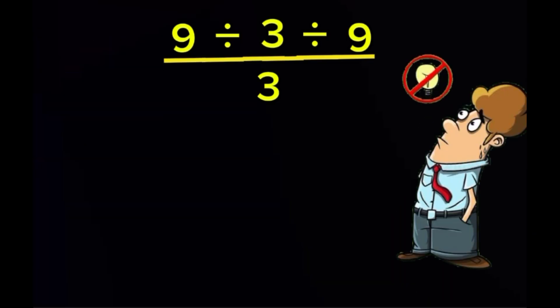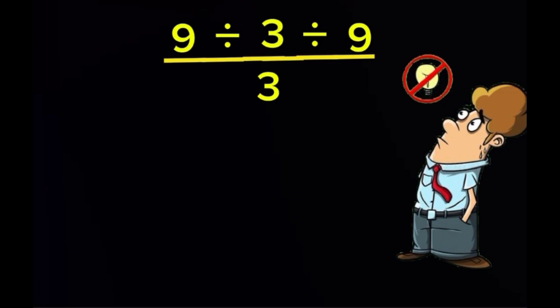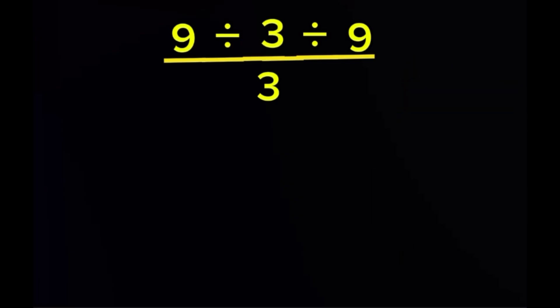Do not rush it, because rushing is exactly how this question traps people. Let's solve it. Start by taking 3 divided by 9, which gives 1 third. Now take 9 divided by 1 third and you get 27. Divide that by 3 and the result is 9.